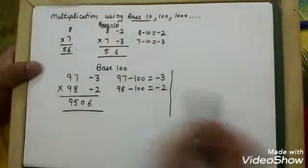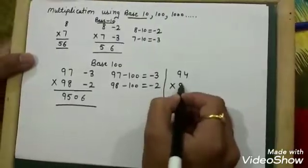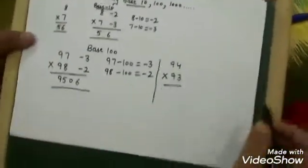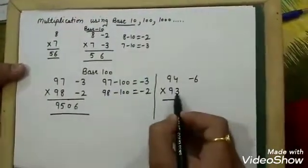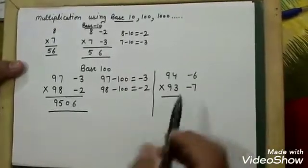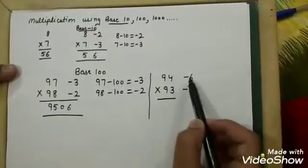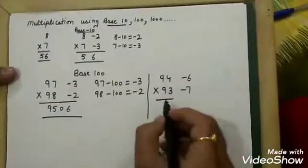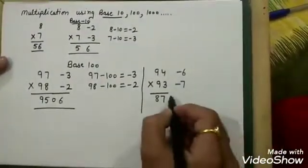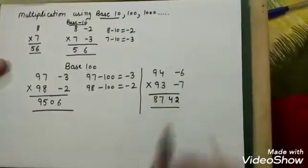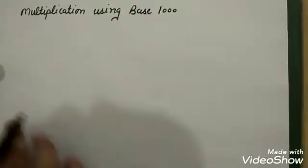Let's do one more example with base 100: 94 multiply 93. 94 minus 100 is minus 6, and 93 minus 100 is minus 7. Checking the subtraction: 94 minus 7 and 93 minus 6 give the same value, which is 87. Then 7 sixes are 42 — minus minus gives plus — so the final answer is 8742.